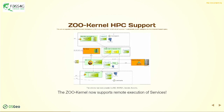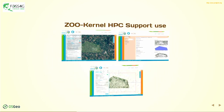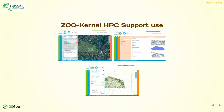We were involved in Geosud and then the Phidias HPC project, where the ZOO kernel was used to execute remote processing on an HPC server — one of the ten most powerful servers in the world. Here you can see the history and user interface of the Geosud project, where the automatic publication of web services like WMS and WCS was used not only for the output but also for the input.